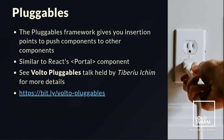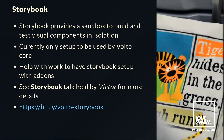Next, let's discuss Pluggables, introduced into Volto core by Tiberiu. The Pluggables framework gives you insertion points to push components into other components. They are similar to React's portal component already used in Volto core, but more powerful and more extensible. Written documentation about Pluggables is available at the Volto documentation site. For technical details and real-world examples, check out the Volto Pluggables talk held by Tiberiu Ekim.